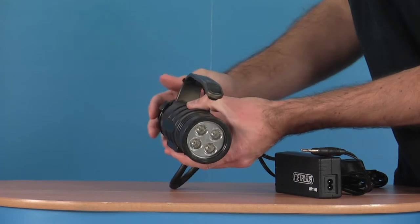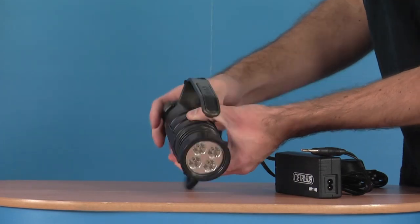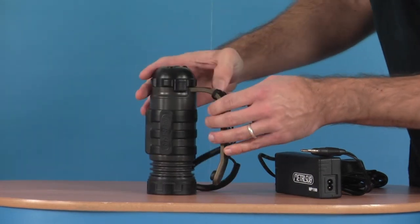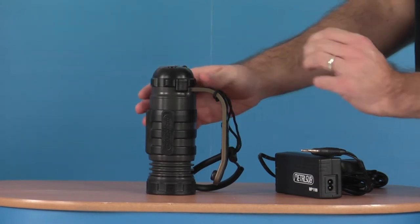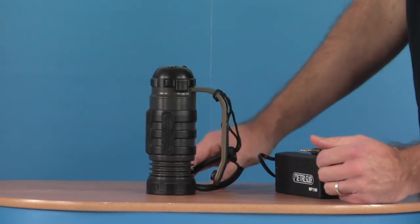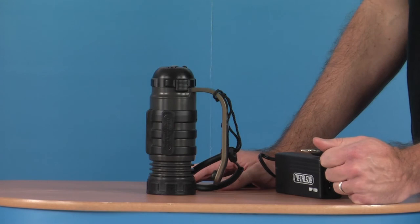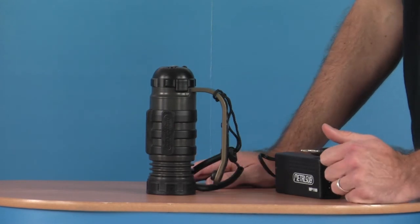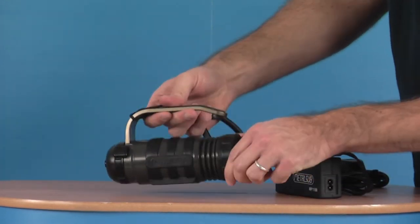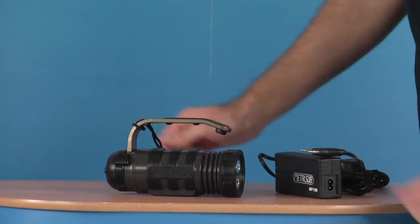When you're getting low, when you get down to your last 20%, the torch will automatically drop down to a third of its power to conserve battery life which will give you about another 10 minutes once it reaches about 10%. But all over, a very high quality dive torch.